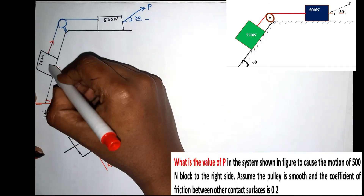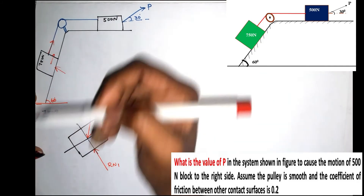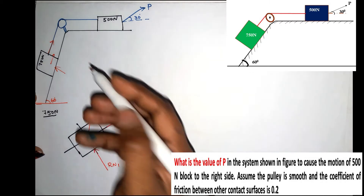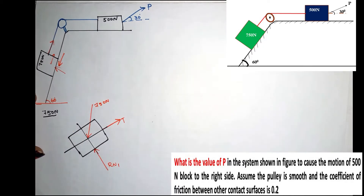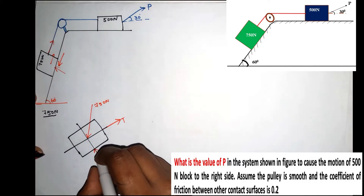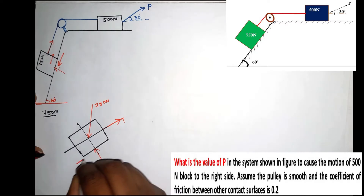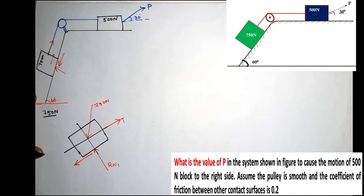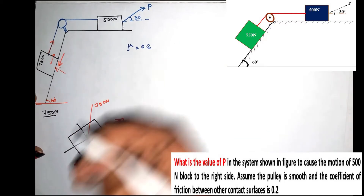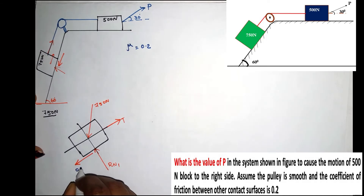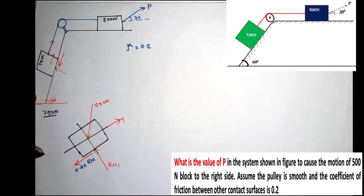The movement of the 750N block is in the downward direction along the inclined plane. Therefore, the friction force acts in the opposite direction to the motion. We mark the friction force direction, and the equation for friction force is μ × RN1, which equals 0.2 × RN1.